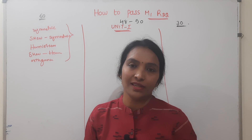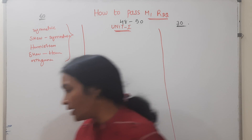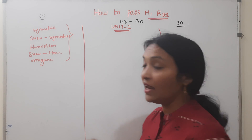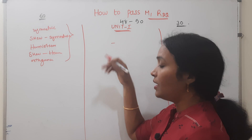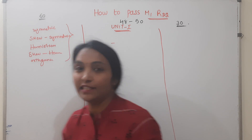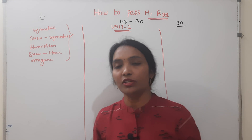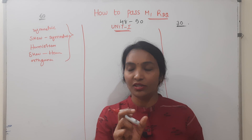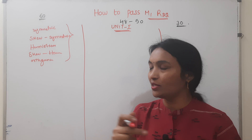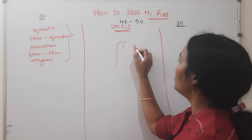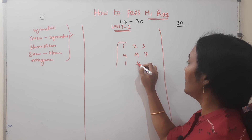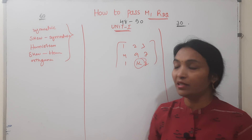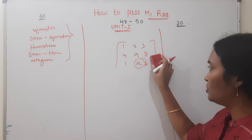There is also a small problem section. You want to do a matrix problem. I am already doing a playlist for this. For example: given a matrix [1, 2, 3, 4, 9, 7, 1, K, 2], find K, find the rank of the matrix, and find the value of K. These are common problem types.